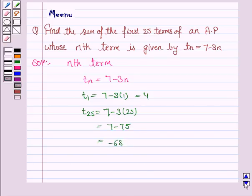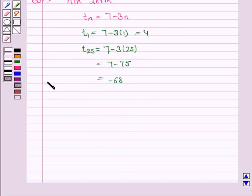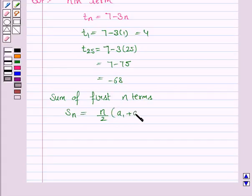Now sum of first n terms denoted by Sn is given by the formula n by 2, that is the number of terms into A1, that is the first term, plus An, that is nth term.